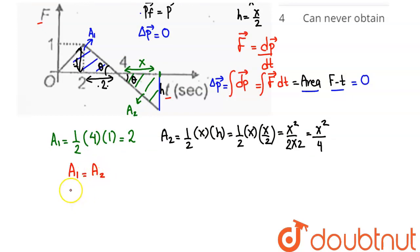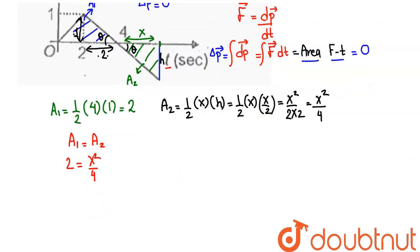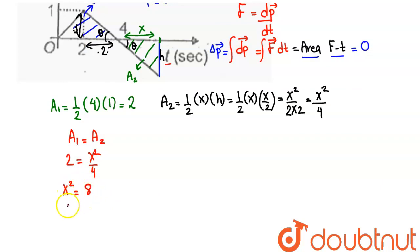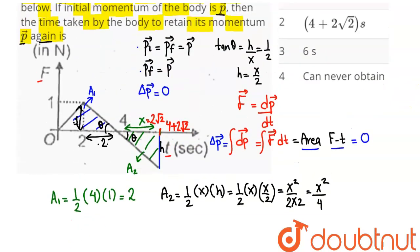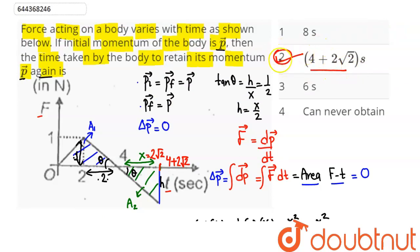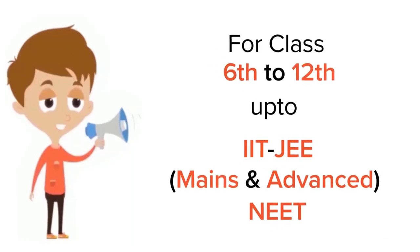Equating A1 = A2 gives 2 = x²/4, so x² = 8, which implies x = 2√2 (taking the positive value since it is a length). The total time is therefore 4 + x = 4 + 2√2 seconds. Hence option number 2 is the correct answer.